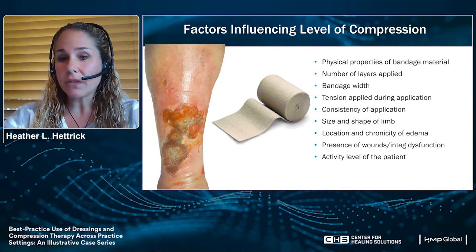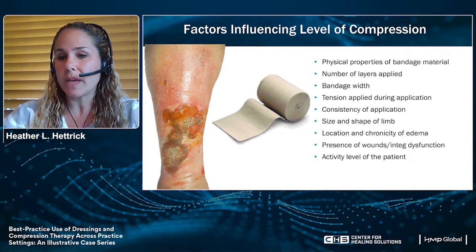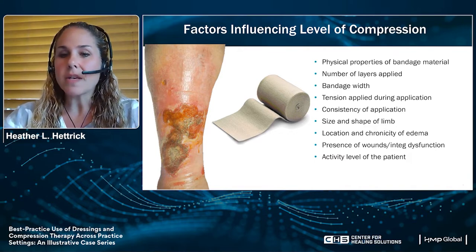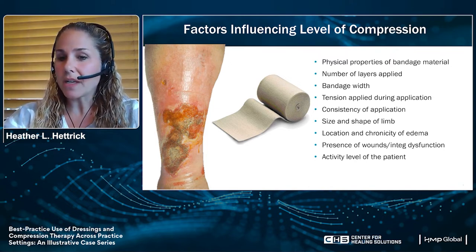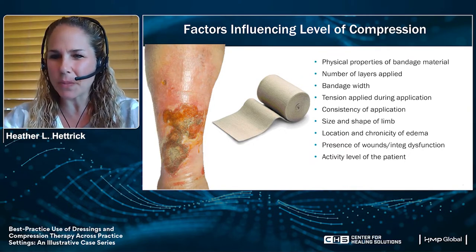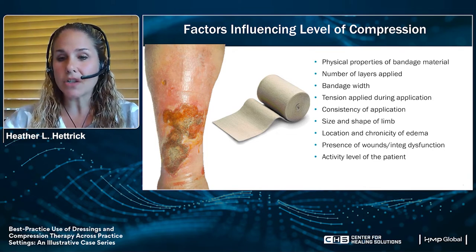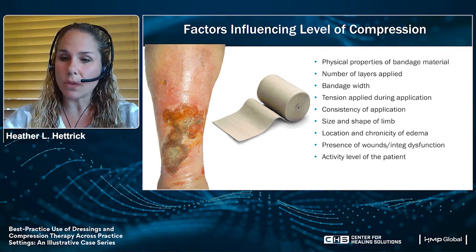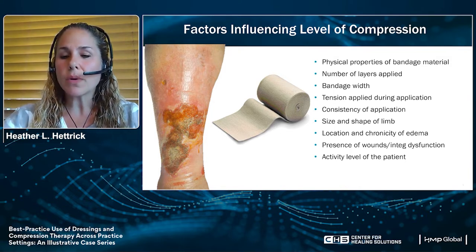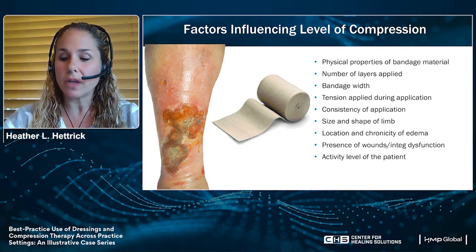There are a lot of factors that influence the level of compression: the physical or textile properties of the bandage material itself, the number of layers applied, the width of the bandage, the tension applied during application — referring to Laplace's law — the consistency of application, the size and shape of the limb, the location and chronicity of the edema or swelling, the presence of wounds or integumentary dysfunction, and the activity level of the patient.